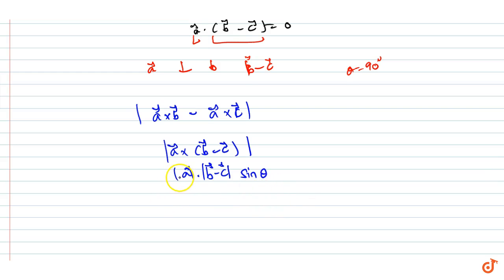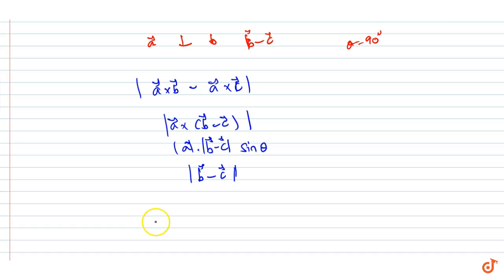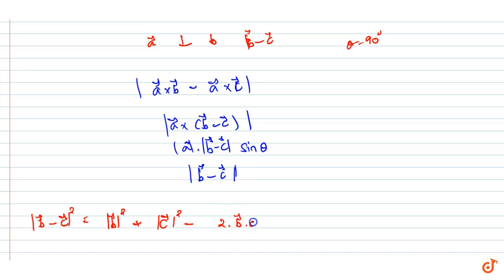We now need to find |b - c|. The angle between b and c is π/3. We compute |b - c|² = |b|² + |c|² - 2(b·c). Since b and c are unit vectors, |b| = |c| = 1, and b·c = |b||c|cosθ = 1·1·cos(π/3) = 1/2.